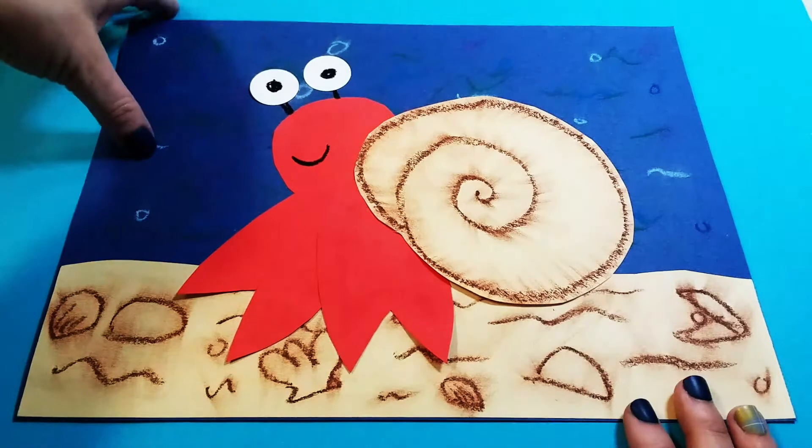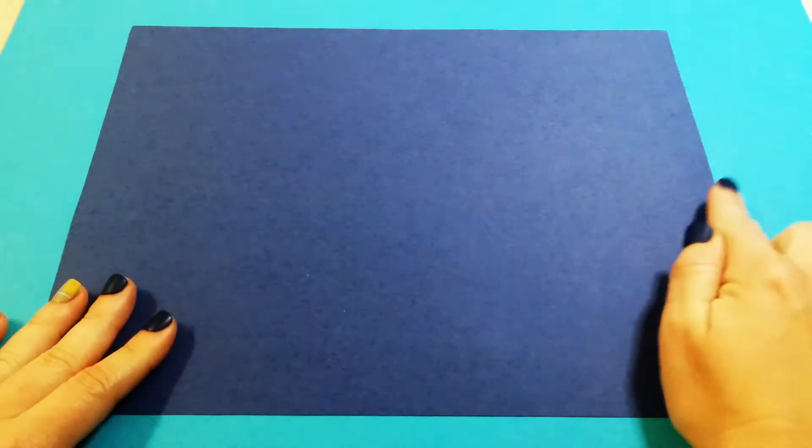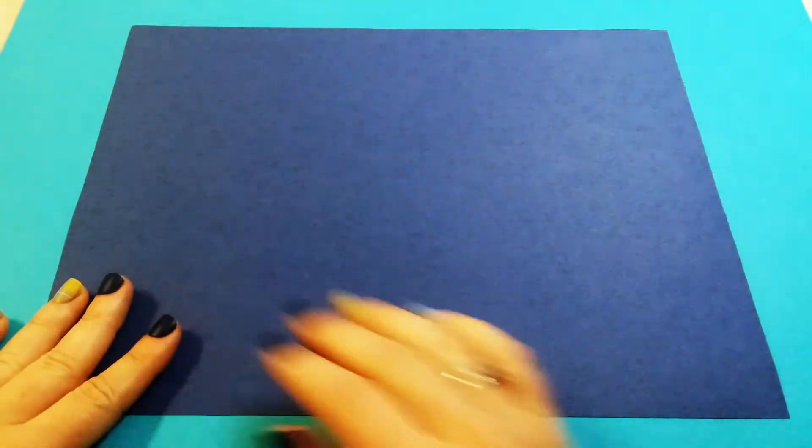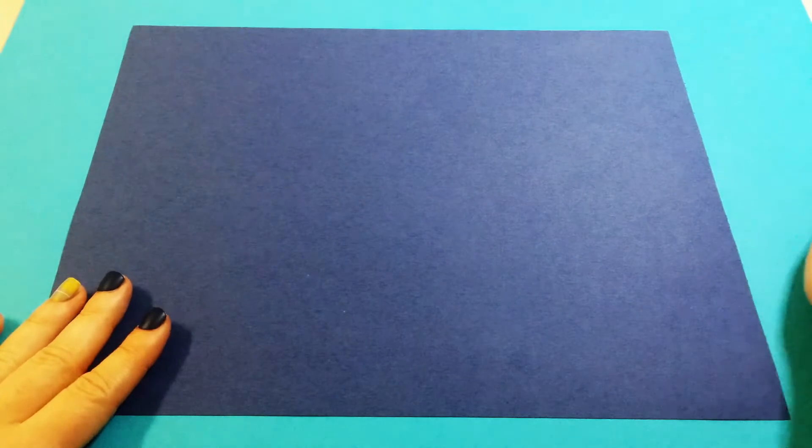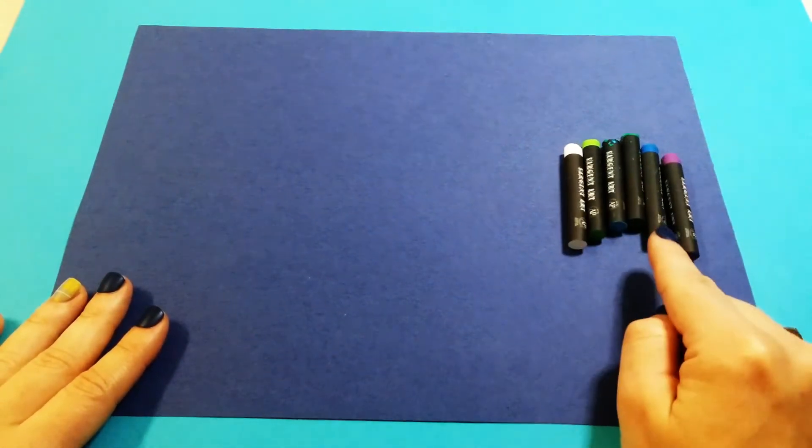So what we're going to do is start with a blue piece of construction paper and I want you to hold it landscape style so that it's wider side to side than it is up and down. We're going to start by decorating this to make it look like the ocean. So what I want you to do is get a white oil pastel as well as a whole bunch of cool colors.